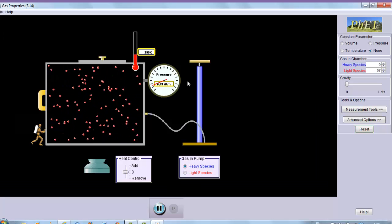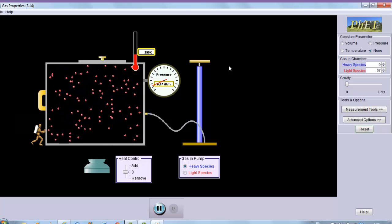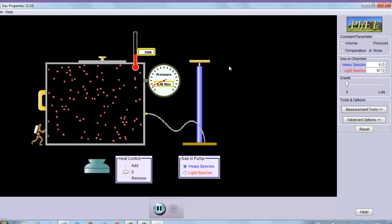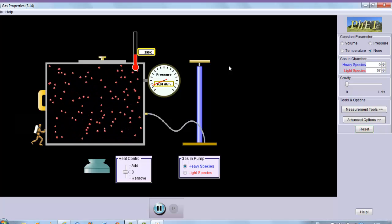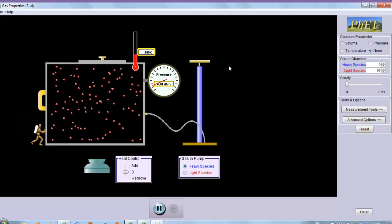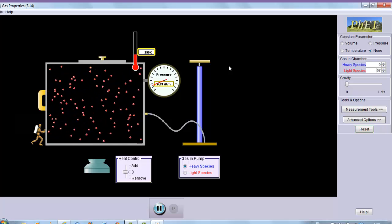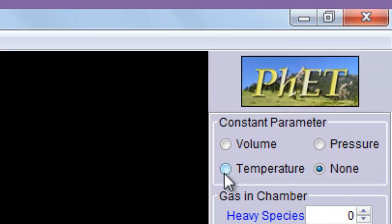Now that you know how to use the pressure gauge or how to measure pressure, you could use the simulation to demonstrate all three gas laws you've learned about: Boyle's law, Charles' law, and Gay-Lussac's law. What I would like you to do is demonstrate Boyle's law. To demonstrate Boyle's law, the relationship between pressure and volume, go to the right and click on constant parameter and choose temperature.